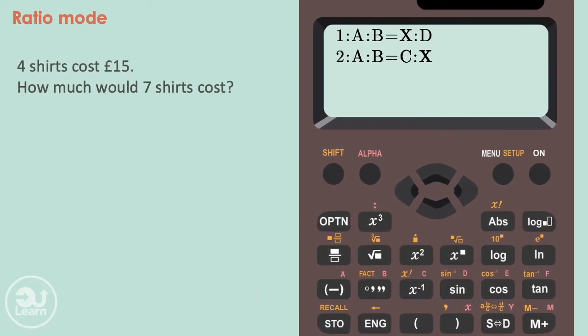Four shirts cost £15. How much would seven shirts cost? Let's put this information into a ratio. 4 to 15 and 7 to our unknown price we're looking for. This is the same structure as the second option in the ratio mode where there is a missing value on the right part of the second ratio.